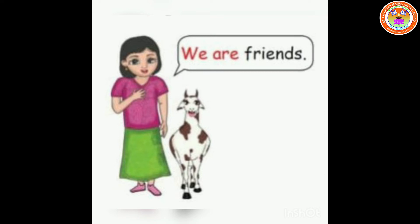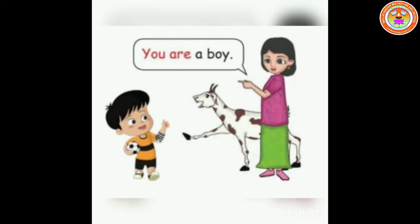Can you understand, children? Next, when she is telling about herself and Chittu together, she uses 'we are' — that is plural. 'We are friends.' In the next sentence: 'You are a boy.' Here she is talking about another person, so she uses 'you are'. She is pointing to another person, so she says 'you are a boy'.